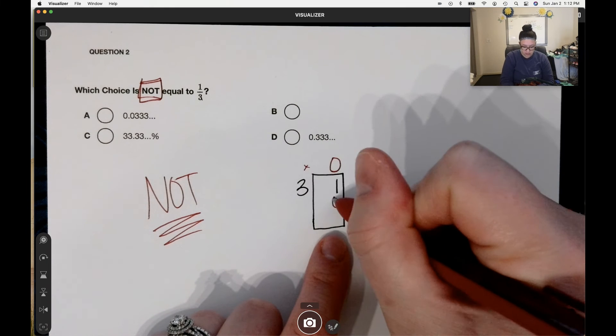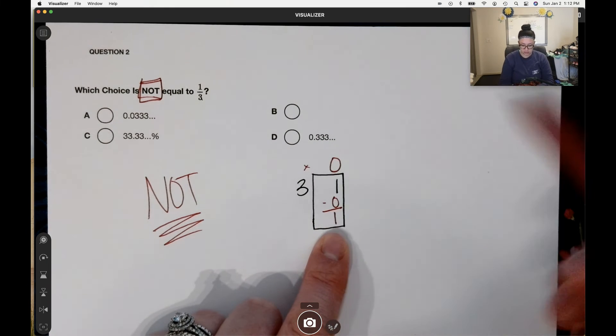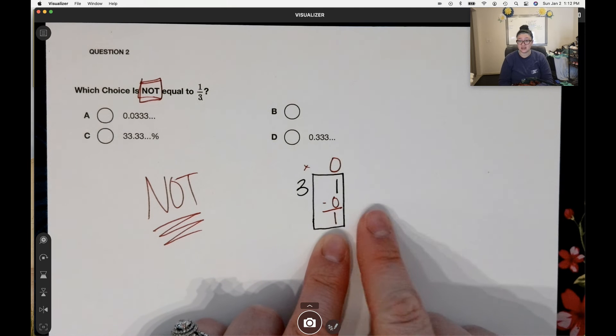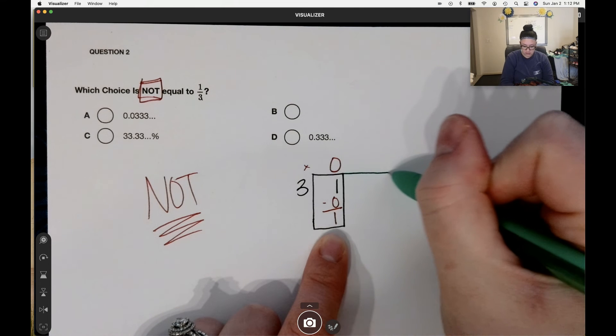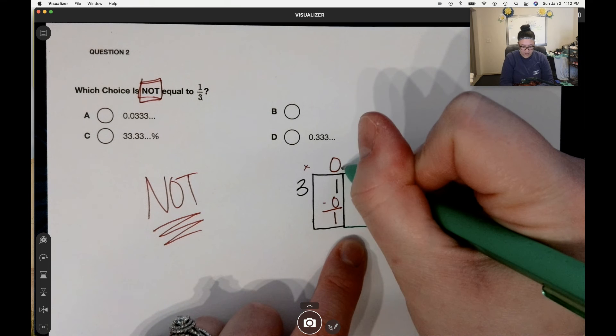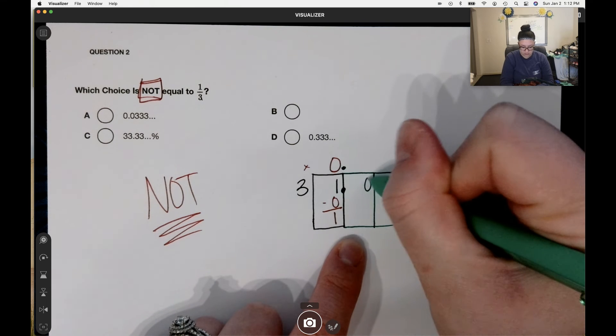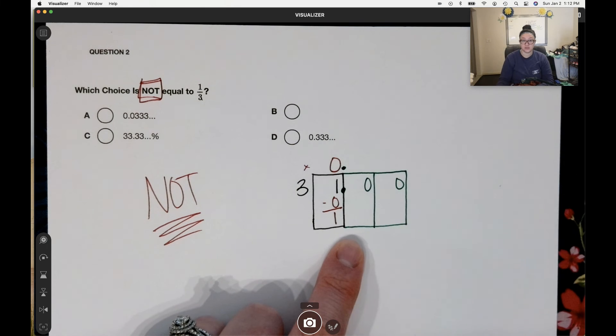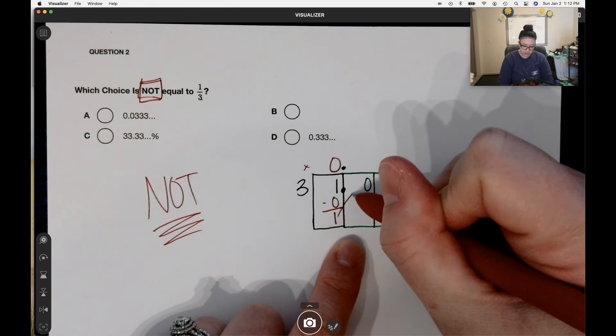Zero times three is zero. Subtract. But I'm not done yet. I need to add more boxes. If I add boxes, I have to add a decimal and some zeros so that way I can carry over my one.